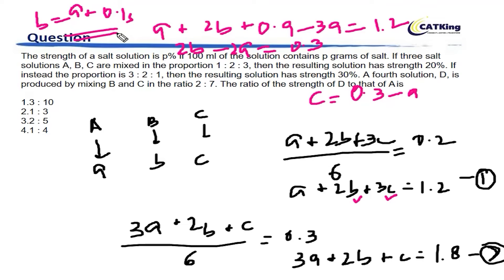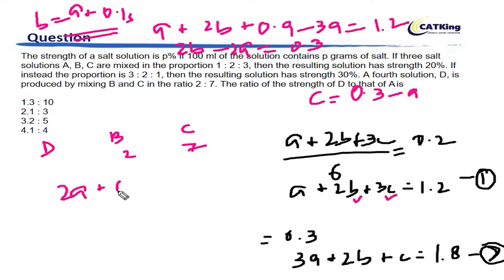Now, what we have to do is find the ratio of strength of D to that of A. We have found out B and C in terms of A. Now, we have another solution which is D. D has B and C in the ratio 2 is to 7. Error at any of these steps will express itself. It will give you values that will not reduce to simpler values. That's one way of checking whether you are going on the right track or not.